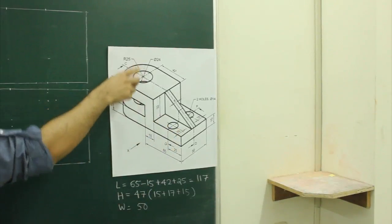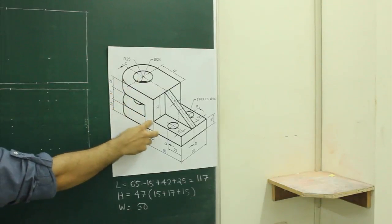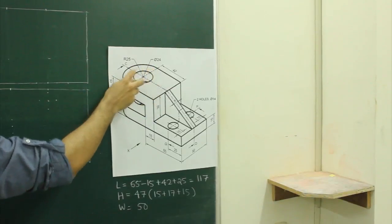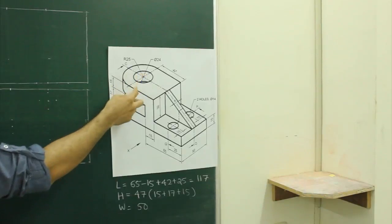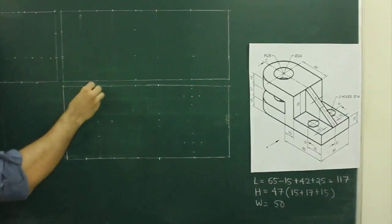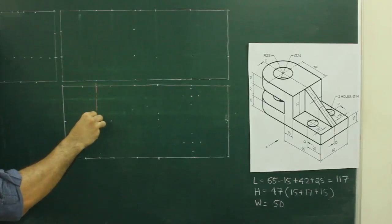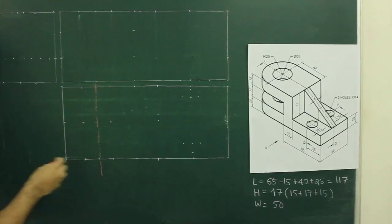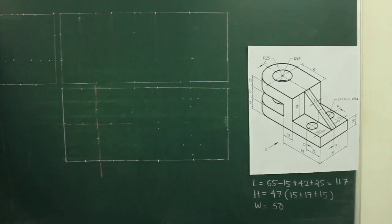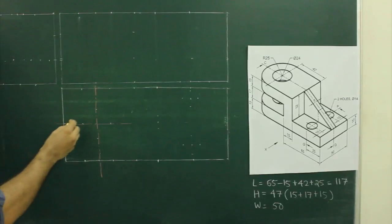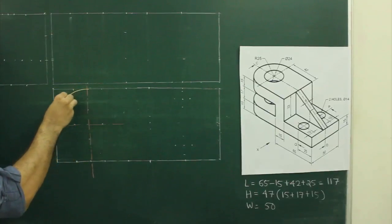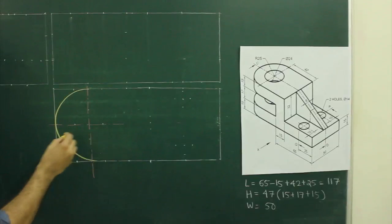In this case, when you see from the front you will see a rectangle, and when you see from the top you will see a circle. So first we will start with the circle, which means we will draw the top view. First you will draw the axis line, go inside by 25, go down by 25, and you can draw a circle of radius 25.